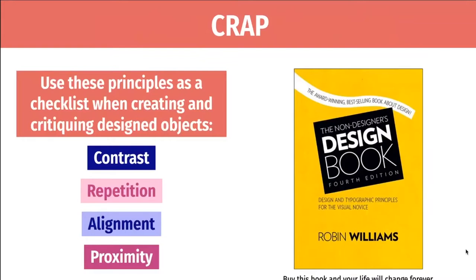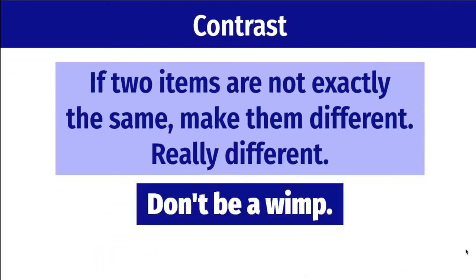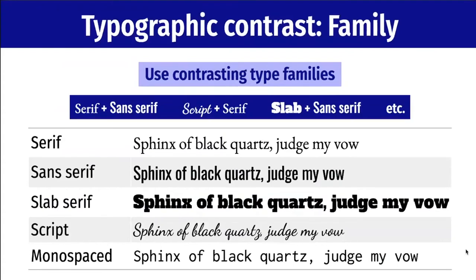We're going to start with C — Contrast. What contrast means is that you want items on the page to either be identical or make them very different. Don't be wimpy about making them different. There are lots of ways to incorporate contrast into design. One really easy way is through fonts — typographic contrast. With fonts you can mix and match different families. You may have noticed this as you're changing fonts in Word — 'oh, I can make this curly or comic-booky' — but there's actually a whole world of font design and typography.